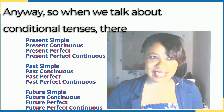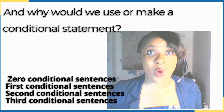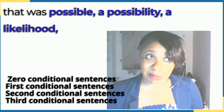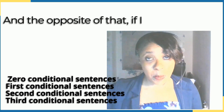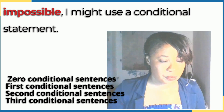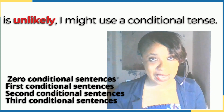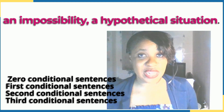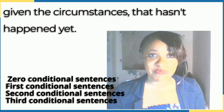When we talk about conditional tenses, there are four conditions that we refer to. What is a conditional tense, and why would we use one? If I were going to say something that was possible — a possibility, a likelihood — I might use a conditional tense. My conditional tense would express a probability, a likelihood, an impossibility, a hypothetical. In the middle we have the unlikely: if circumstances changed, it would have happened, given the circumstances. That hasn't happened yet.